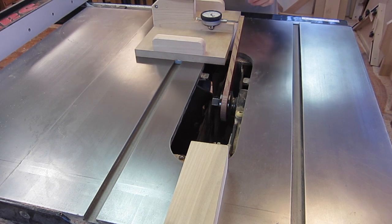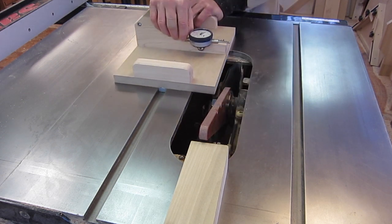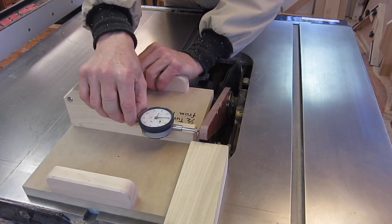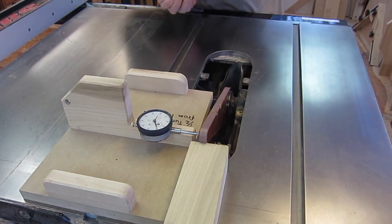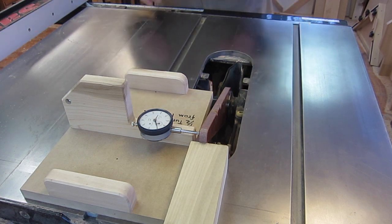Now with the bolts still not tightened, I'll repeat that test. Being careful not to move the table. I'm 1,000th of an inch out. So I think I'll leave that. And if that wasn't right, I would just do another adjustment.